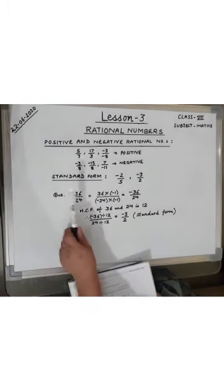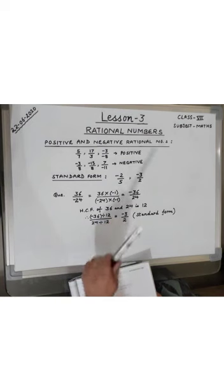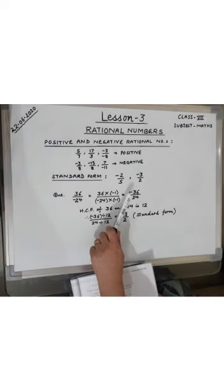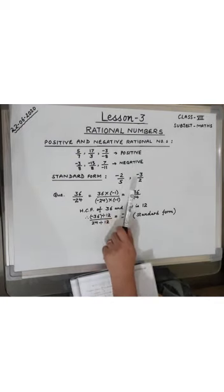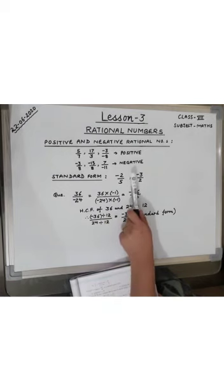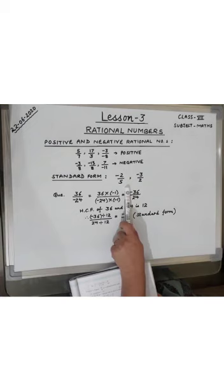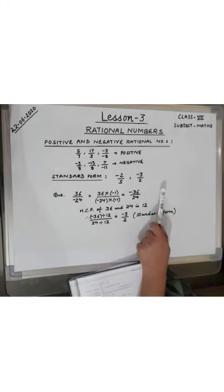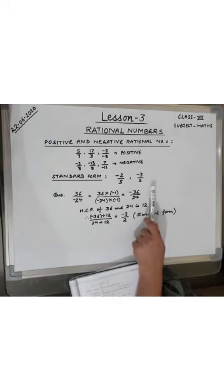Now, how to write the standard form of a rational number. A rational number is said to be in the standard form — or simplest form — if its denominator is positive and the numerator and denominator have no common factor other than 1. For example, minus 2 upon 5 and minus 3 upon 2 are both in standard form.